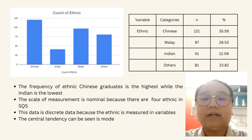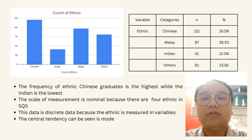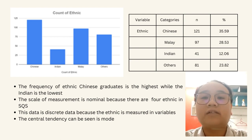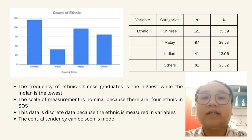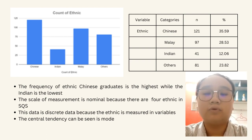Next is the frequency of ethnic. From the graph and table, we know that the frequency of ethnic Chinese graduates is the highest, consisting of 121 out of 340, which is 35.59%, while Indian is the lowest, consisting of only 41 out of 340, at 12.06%. The scale of measurement is nominal because there are only 4 ethnicities in SQS, and the data is discrete. The central tendency that can be seen here is also mode.